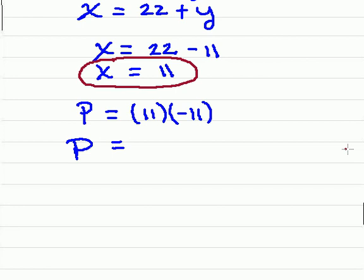Now if they ask for the product, you're going to take both that negative 11 and multiply it by the 11. Therefore we have negative 121. That would be the product.